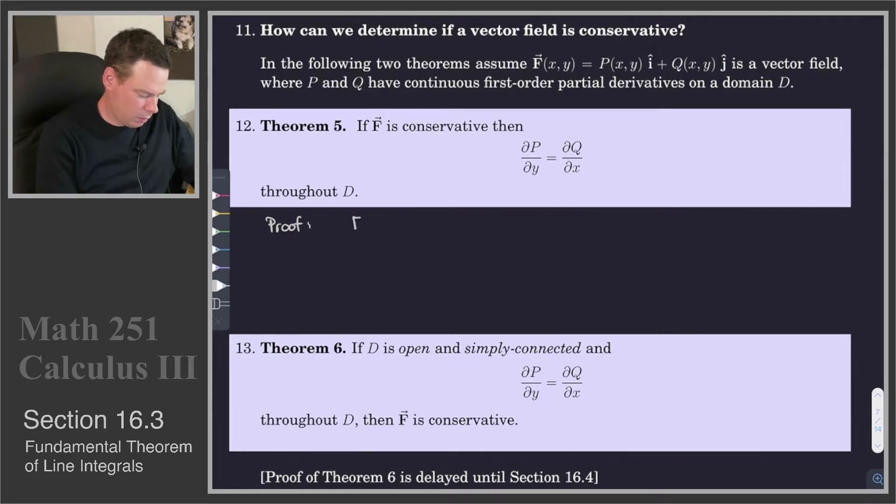Well, if F is conservative, what that means is that F is equal to some f_x, f_y for some scalar function f. But then that means that this is P and this is Q. So P is equal to the x partial of the potential function, Q is equal to the y partial of the potential function.